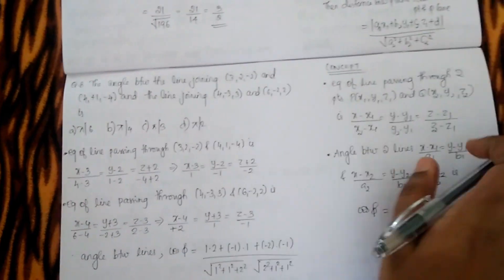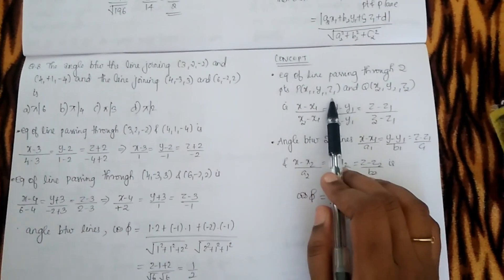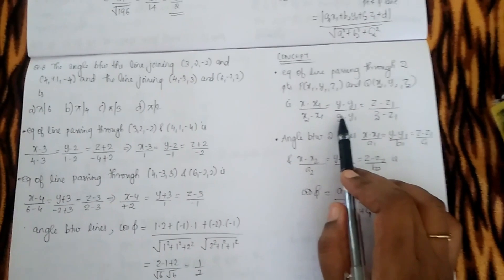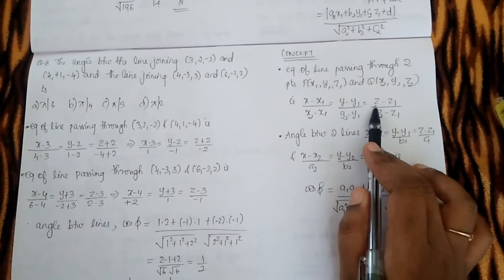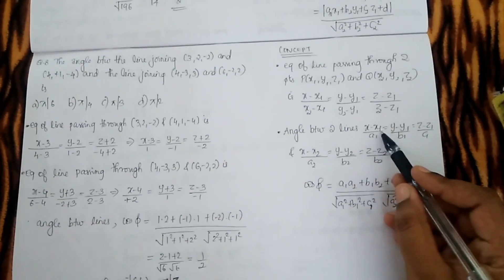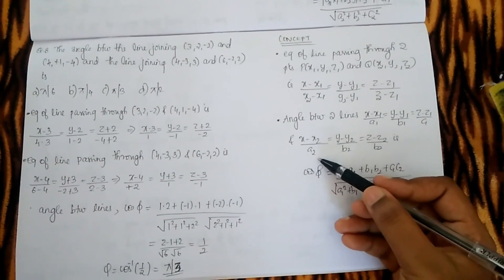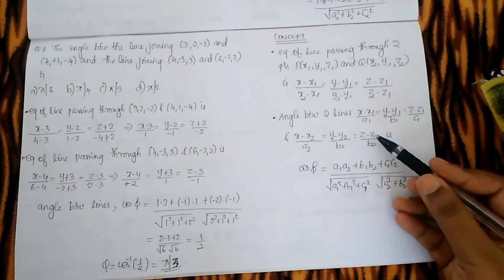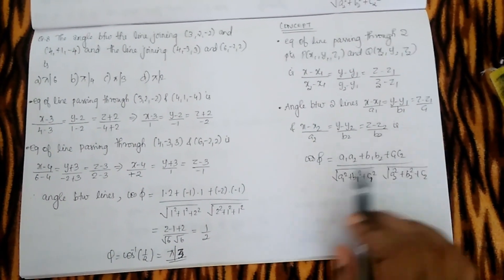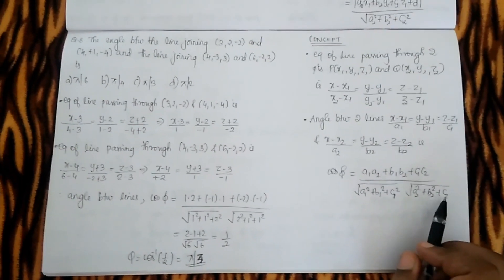The equation of a line through two points is (x − x1)/(x2 − x1) = (y − y1)/(y2 − y1) = (z − z1)/(z2 − z1). The angle between two lines with direction ratios a1, b1, c1 and a2, b2, c2 is given by cos φ = (a1·a2 + b1·b2 + c1·c2) / (√(a1² + b1² + c1²) · √(a2² + b2² + c2²)).